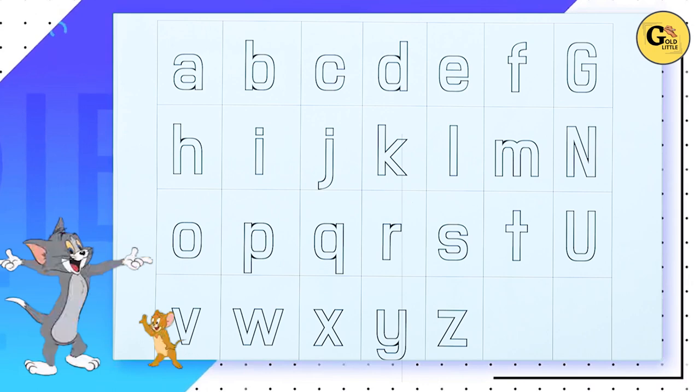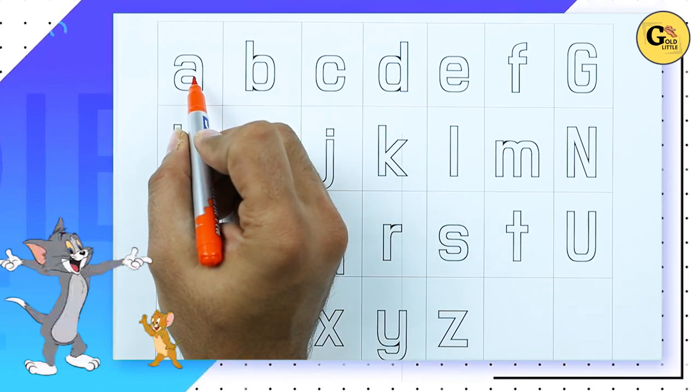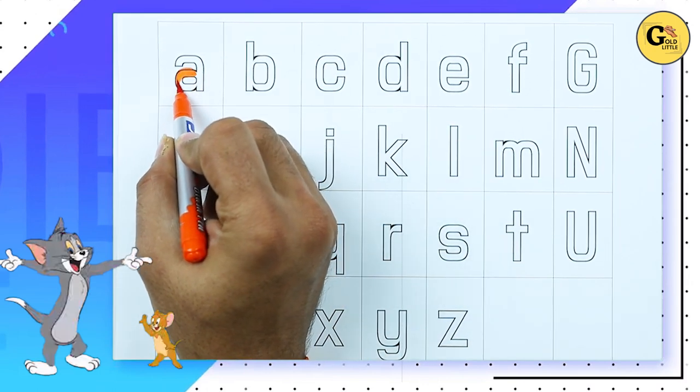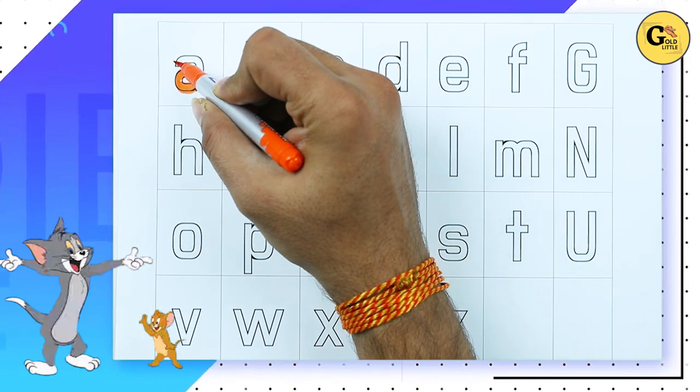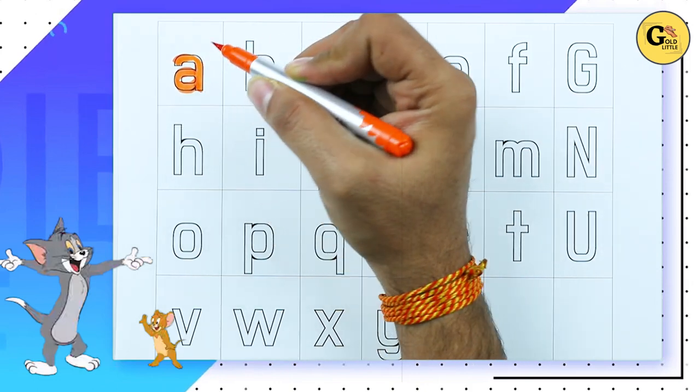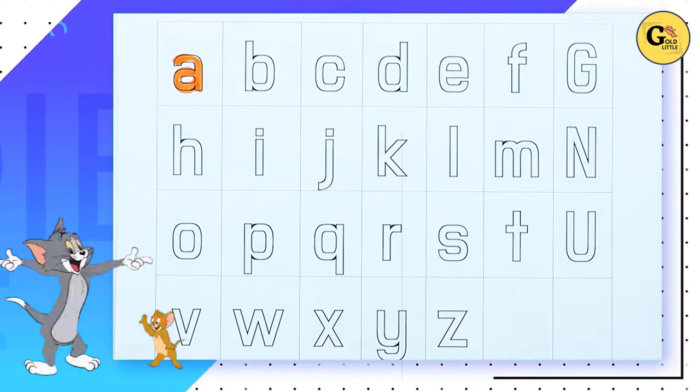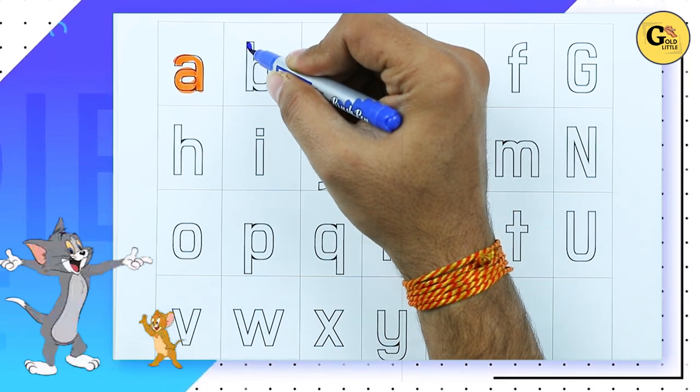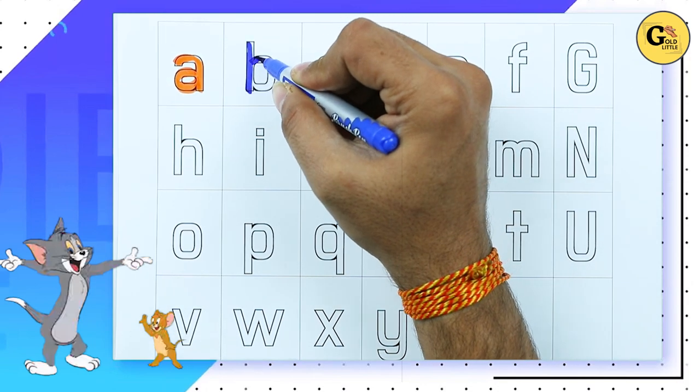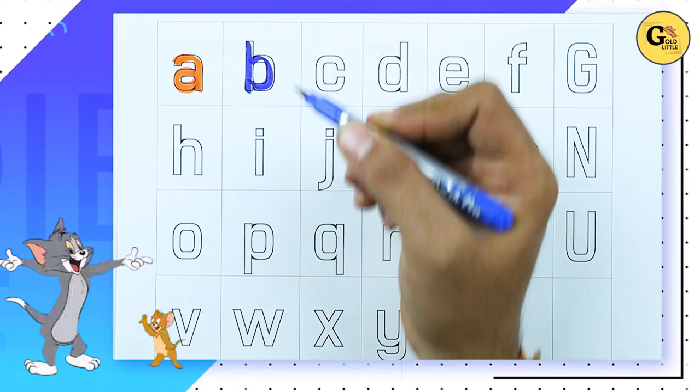Let's start. Make small A. A for Apple. It's A. B. B for Ball. Small B.